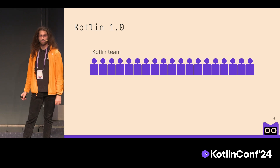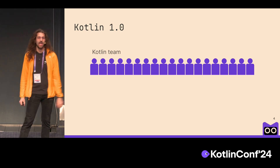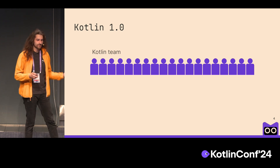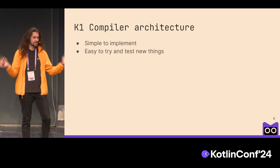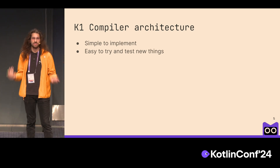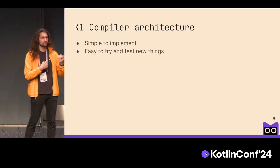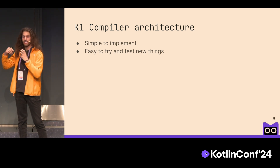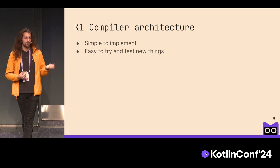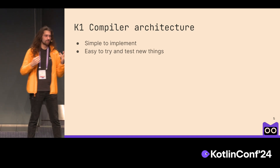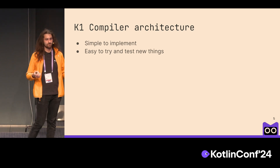When Kotlin 1.0 was released, the Kotlin team was just 19 people — and before that, even fewer. Because of that, the K1 compiler architecture was meant to be simple, because when you're working on a new language, you want to be able to iterate fast. In fact, the K1 compiler architecture was based on a prototype that was good enough to be shipped and released as 1.0.